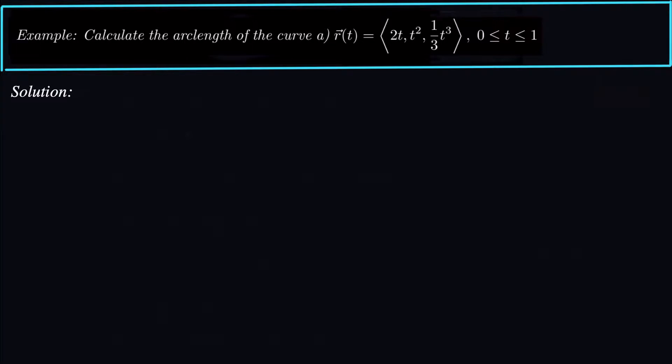Hey guys, what's up today? We're looking at finding the arc length of two different curves. The first curve we have here is a vector function, and it's R of t equals 2t, t squared, 1 third t cubed, and t ranges from 0 to 1.